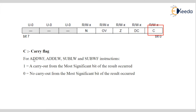The Carry flag is set when a carry is generated. Instructions associated with this flag include ADD WF, ADD LW, SUB LW, and SUB WF — instructions related to working registers and file registers. If this bit is 1, then carry out from the most significant bit of the result occurs. If it is 0, then no carry out from the most significant bit occurs.